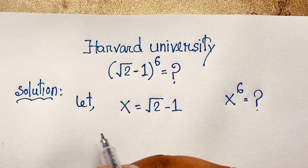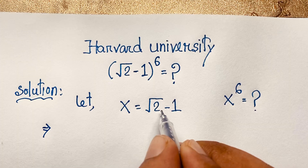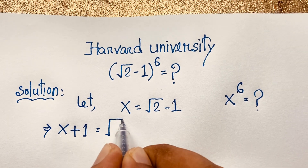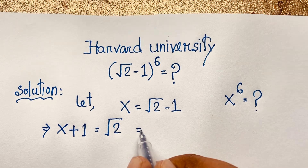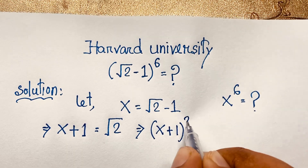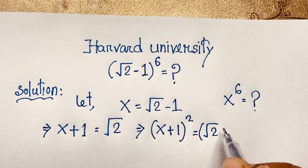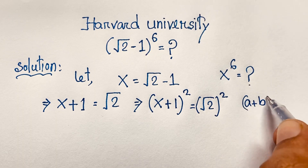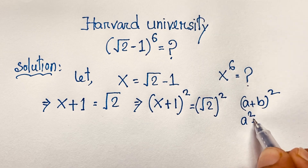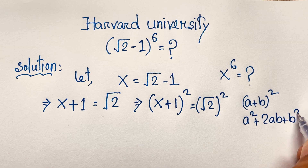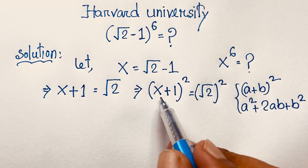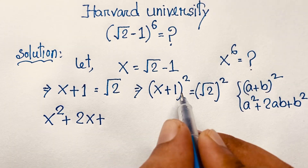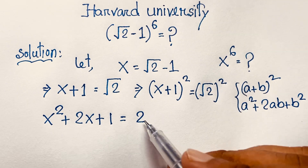Solving step by step: if we move the negative 1 to the other side, it becomes x + 1 = √2. Squaring both sides, (x + 1)² = (√2)². Applying the formula (a + b)² = a² + 2ab + b², where a = x and b = 1, we get x² + 2x + 1 = 2.